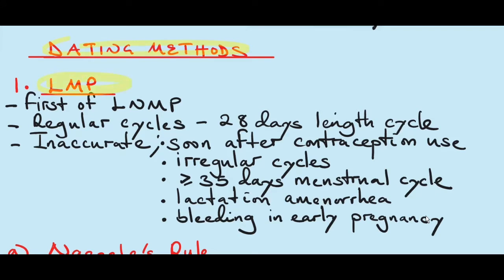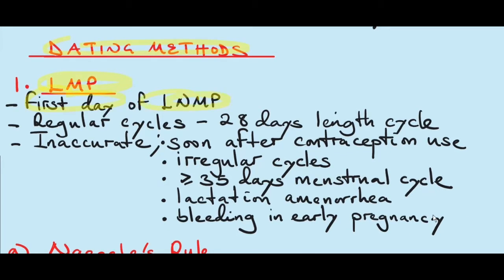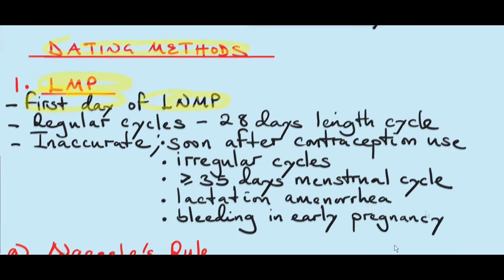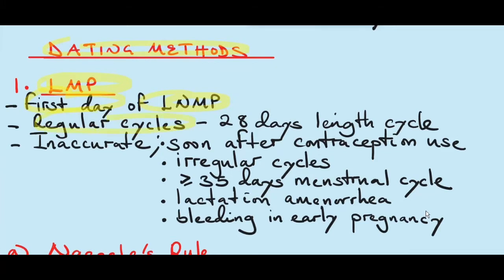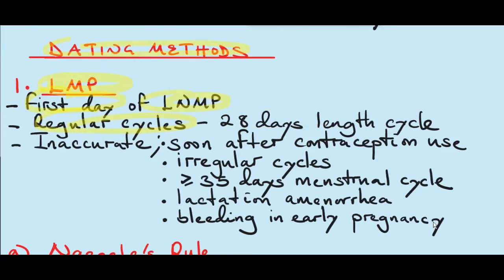The first dating method is the last menstrual period. The LMP is the most common dating method we use. We use the first day of the last normal menstrual period — that is, the first day the woman started her menses, which is called day one of the menstrual cycle. To use the LMP accurately, the woman should have regular cycles and her menstrual cycle should be about 28 days in length. If a woman's menstrual cycle is about 28 days, we assume that she ovulates on day 14. We do not use the ovulation day to calculate the gestational age because not every woman ovulates on day 14, so it's safe to use the last menstrual period for every woman.